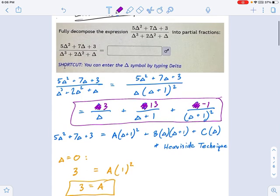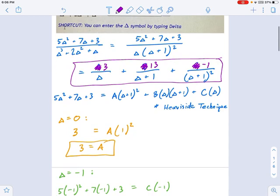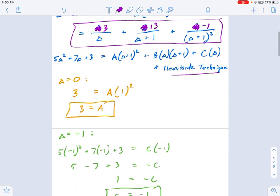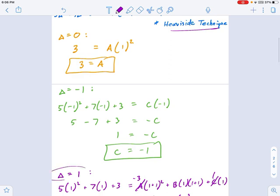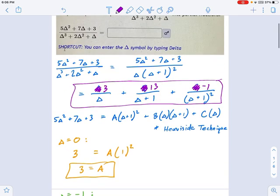Just to review the techniques. The main difference, because we had a repeated linear factor, this guy right here, that delta plus 1 squared, because that's repeated, you not only need delta plus 1 as a denominator, but delta plus 1 squared as a denominator. And then, after you're done with that, you're going to need to solve this the normal way with the Heaviside technique as far as you can, and then just choose some other value, try to pick something not too terrible, and then finish up solving for A, B, and C.